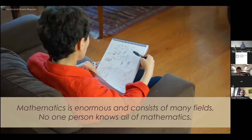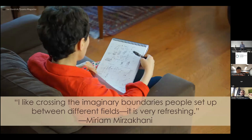So the first example is from knot theory. But before I give you the example, I just want to remind you that mathematics is an enormous subject and consists of many fields. And no one person knows all of mathematics. And there's a beautiful quote from Maryam Mirzakhani, where she says, I like crossing the imaginary boundaries set up between different fields. It is very refreshing. So most mathematicians are specialists. They work in their own area. And most progress also comes from specialists working in their own area. But sometimes there's cross-fertilization, which is very interesting. And also sometimes we put up these imaginary barriers that Mirzakhani is talking about.